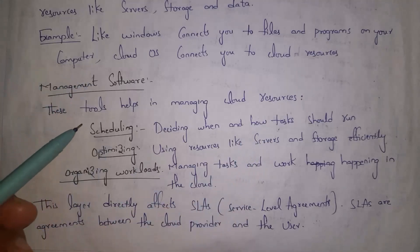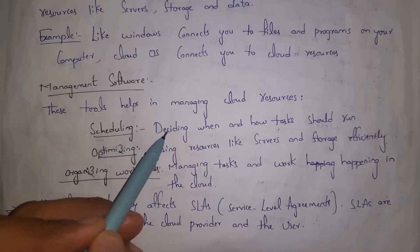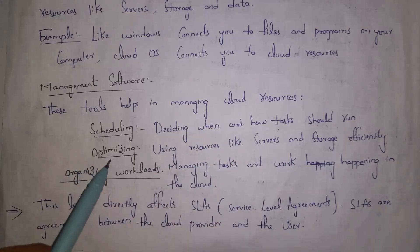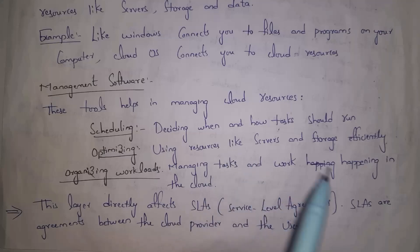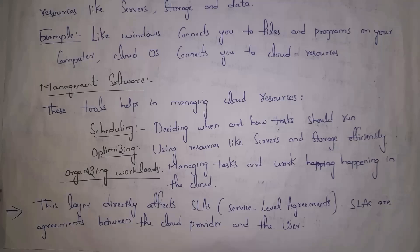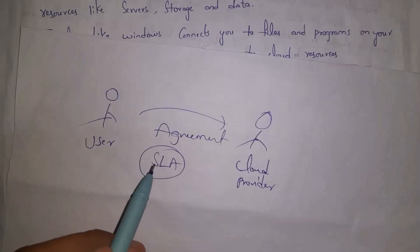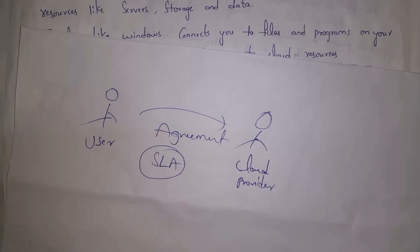The second type of software in the cloud management layer is management software. By using management software we can manage cloud resources through scheduling, optimizing, and organizing workloads. Scheduling means deciding at what time and how a task must run. Optimizing means using cloud resources like servers and storage efficiently — for example, increasing or decreasing servers and storage based on our requirements. Organizing workloads means managing tasks happening in the cloud.